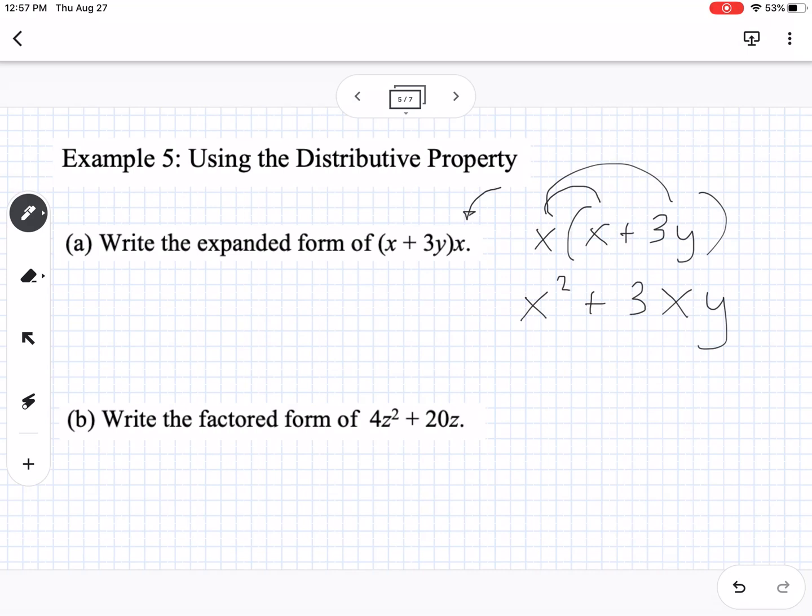Factored form is the opposite, so you're taking out things they both have in common. Looking at 4z² + 20z, we need to find what numbers go into both 4 and 20. We know 4 goes into 20, so we can take out a 4. For the z's, we have two z's on the first term and one z on the second term. We can't factor out more z's than we have, so we pull out one z. That means the first term would have one z left over, then plus 5. A good way to check is to multiply it back out: 4z(z + 5) = 4z² + 20z.